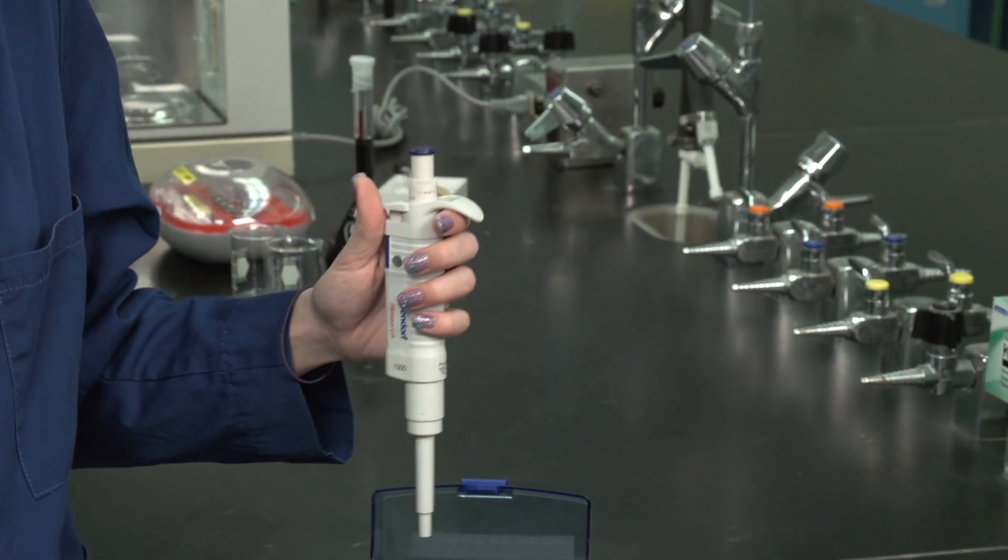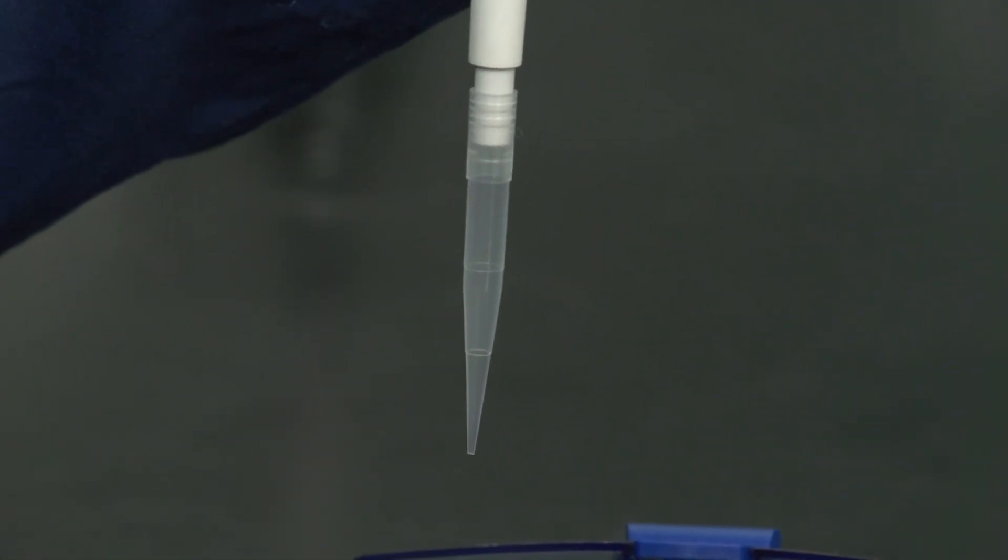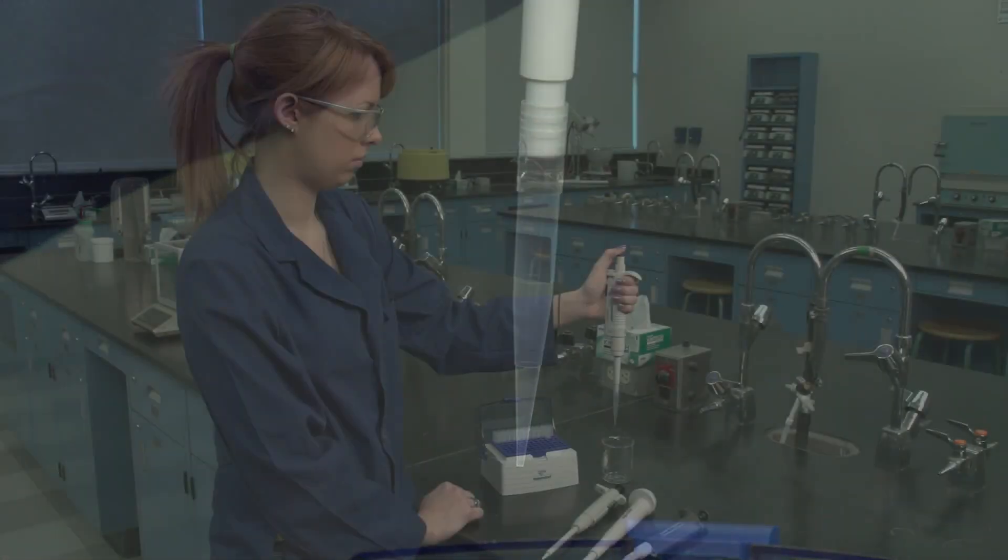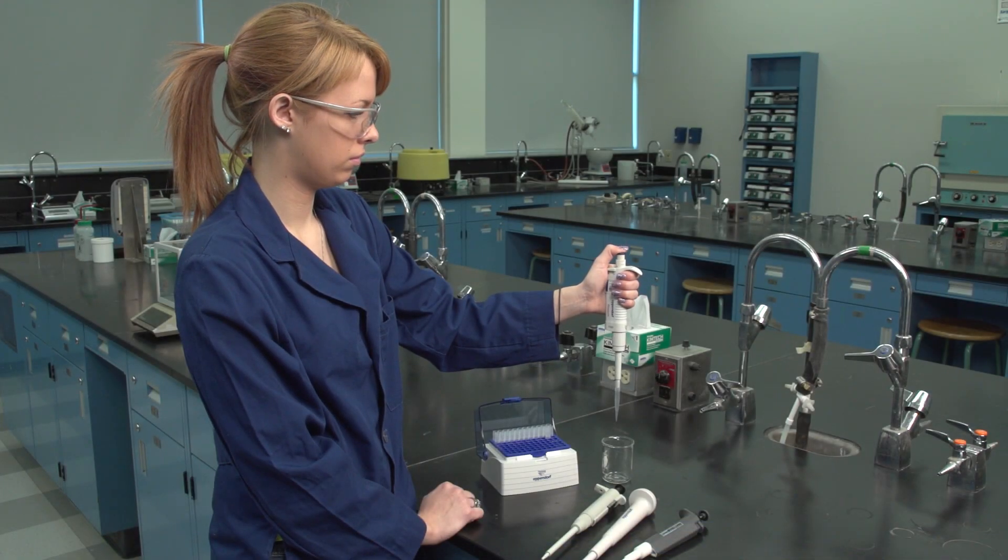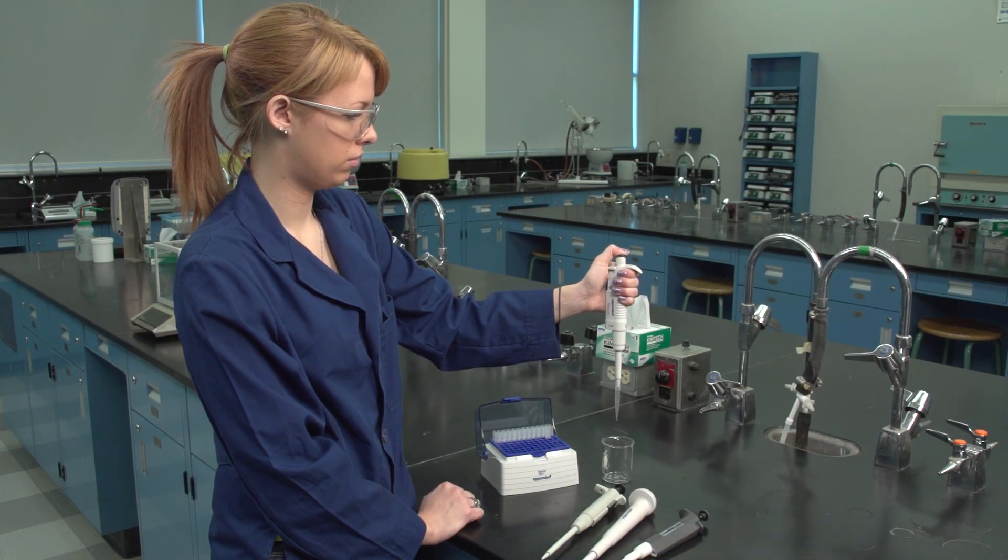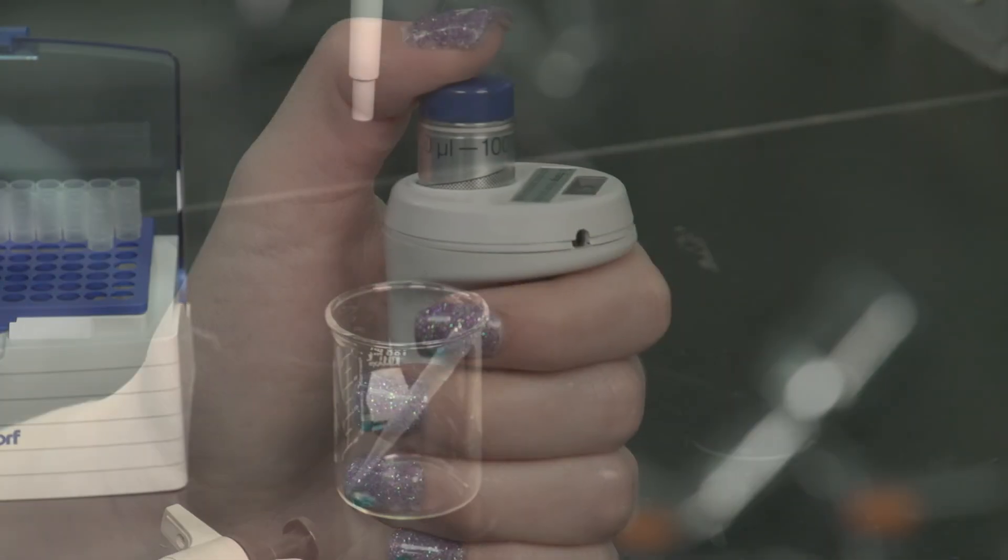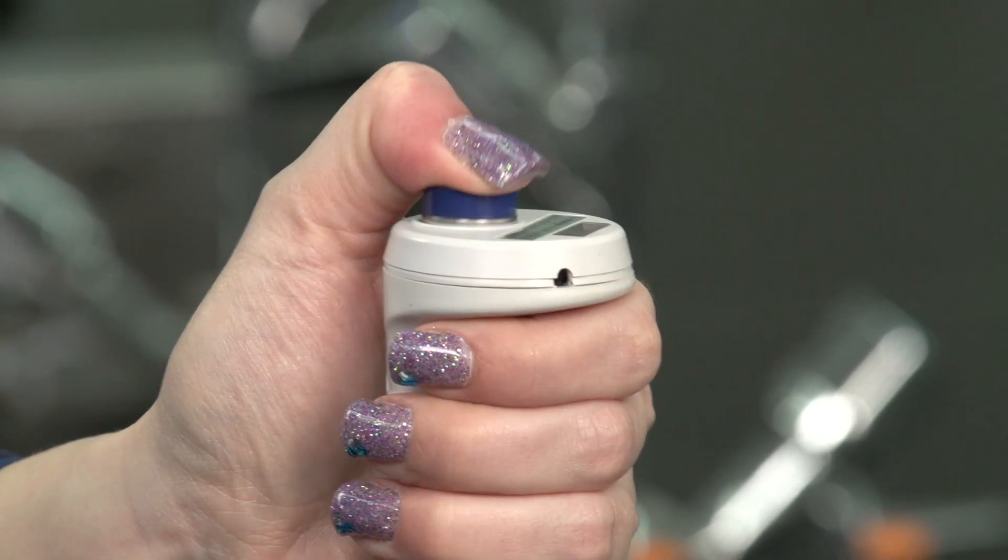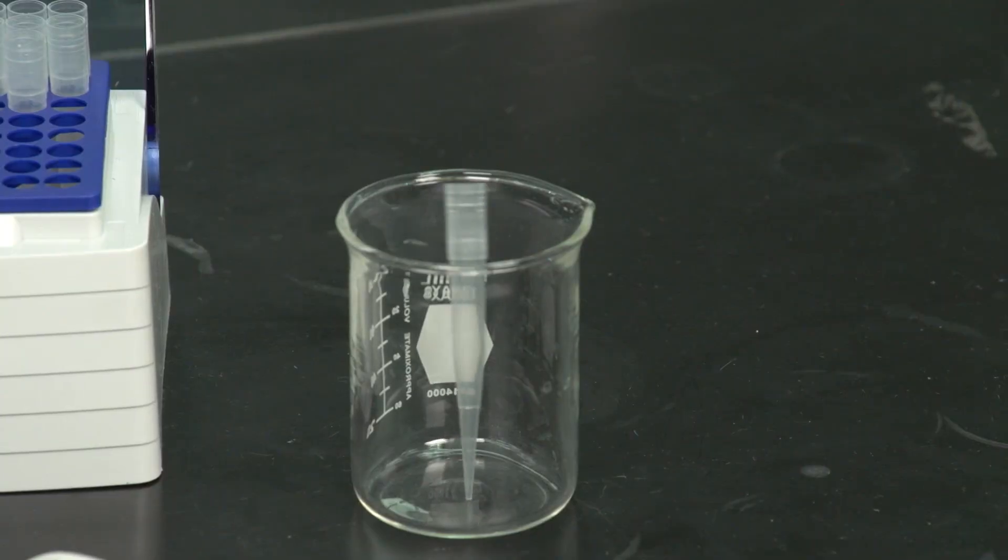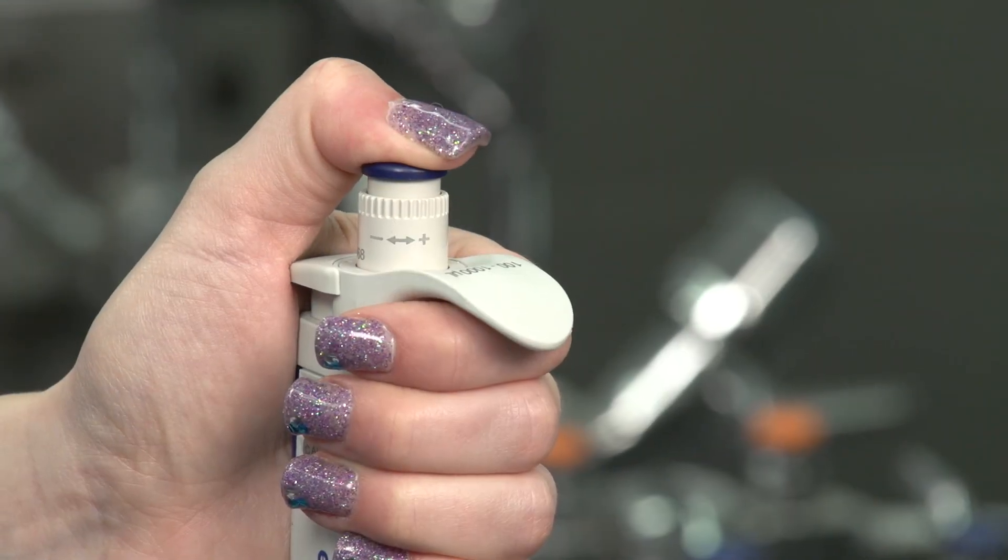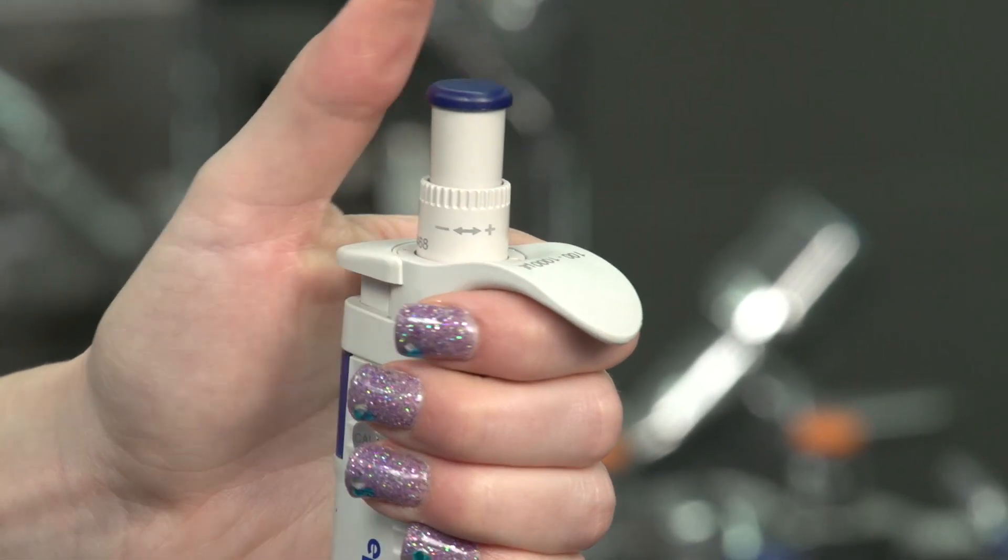Attach a clean tip to the pipette. Never immerse the micropipette into any kind of sample without attaching a disposable tip. Some micropipettes have a plunger with two stops to dispense the liquid and a separate button for ejecting the tip. Other micropipettes have a plunger with a third stop for ejecting the tip. Today we'll use a micropipette with two stops and an ejection button.